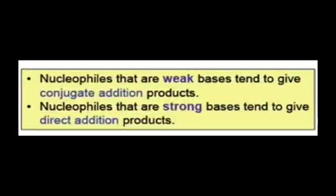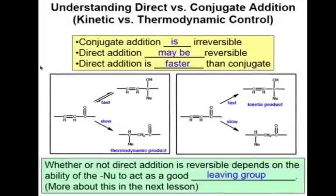This is a convenient rule of thumb to remember, but what are the underlying reasons that really govern why weak bases add conjugate and strong bases tend to add directly, or 1-2? We can get at the answer to this question by considering the kinetic and thermodynamic properties of the key steps of direct and conjugate addition.